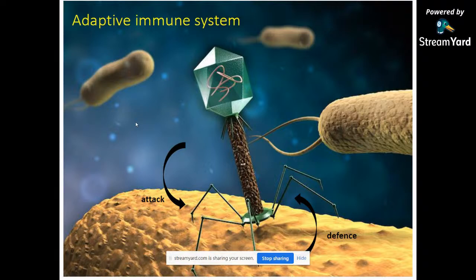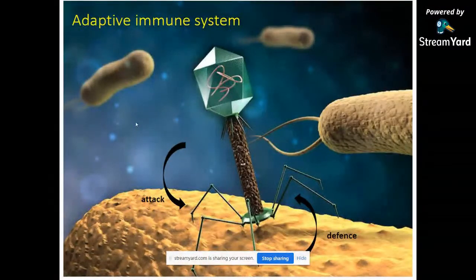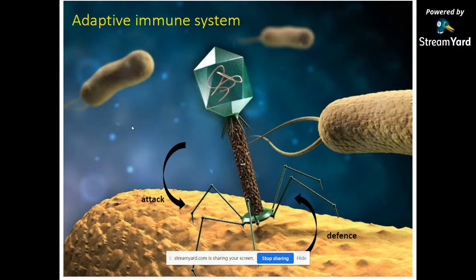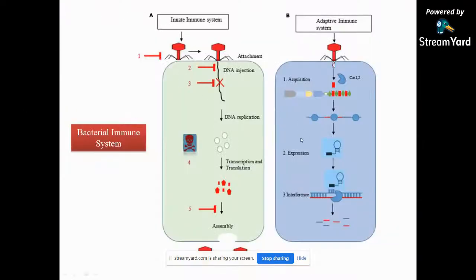Before 1987, nobody thought that bacteria would have an immune system, like how humans have innate and adaptive immune systems. Nobody thought a tiny bacterium could have its own adaptive, memorized immune system. Later, in 1987, they found a chunk of exotic DNA in bacteria with a lot of repetitive elements. I'll go through step by step how it evolved and how they identified bacteria as having an immune system. Bacteria have both innate and adaptive immune systems.